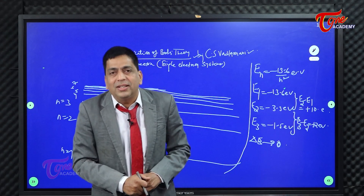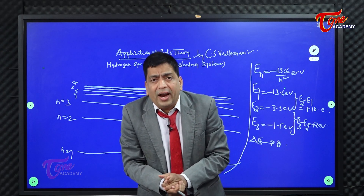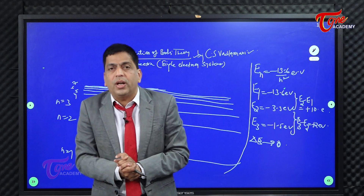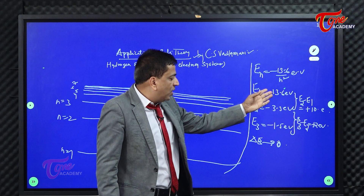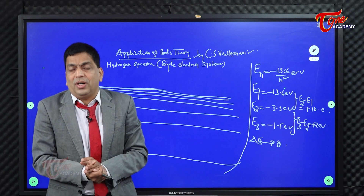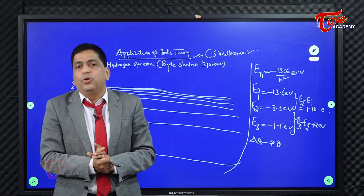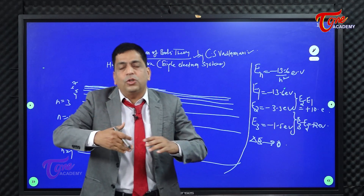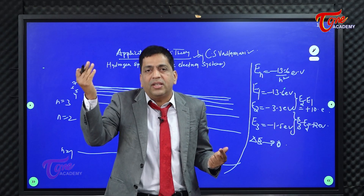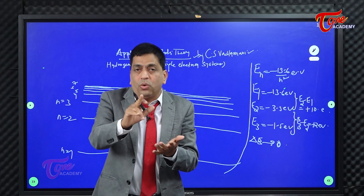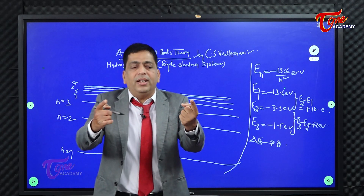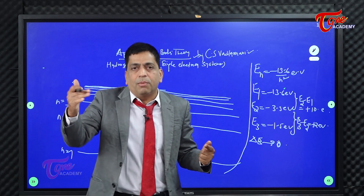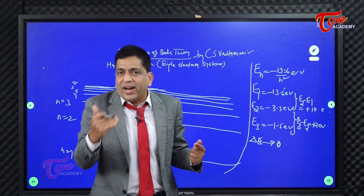Coming to the hydrogen spectra: the lone electron in hydrogen goes to higher energy levels and starts coming back. It's not happening in one atom — you have a number of hydrogen atoms, and in each atom the de-excitation process has started. In some atoms the jump is from 2 to 1, others from 3 to 1, 4 to 1, 5 to 1, 6 to 1, 7 to 1. I am interested in where the electron is jumping to, not from where.